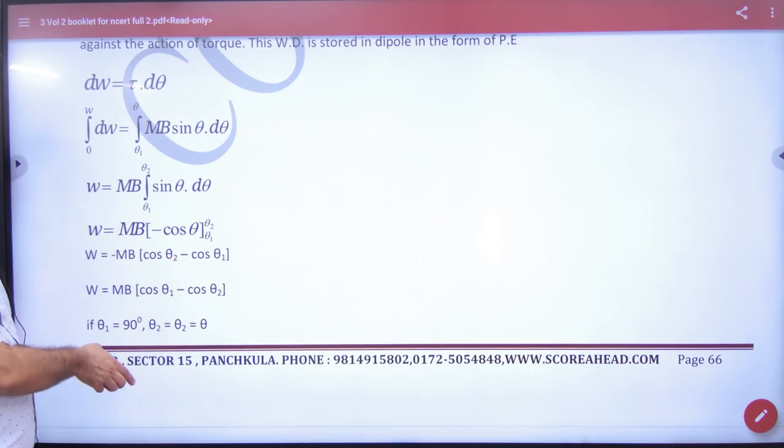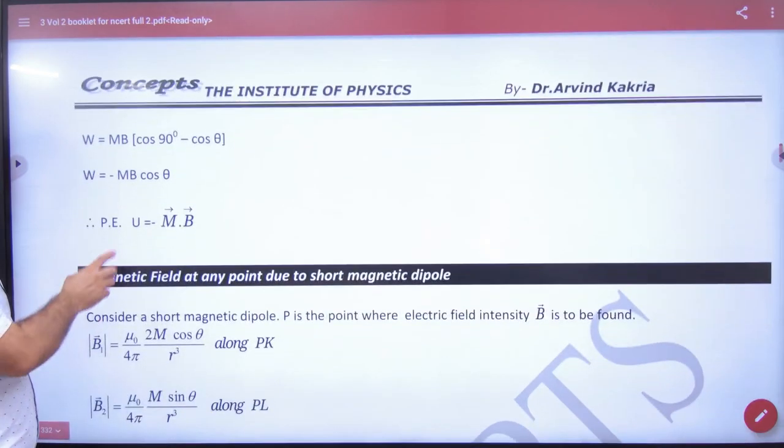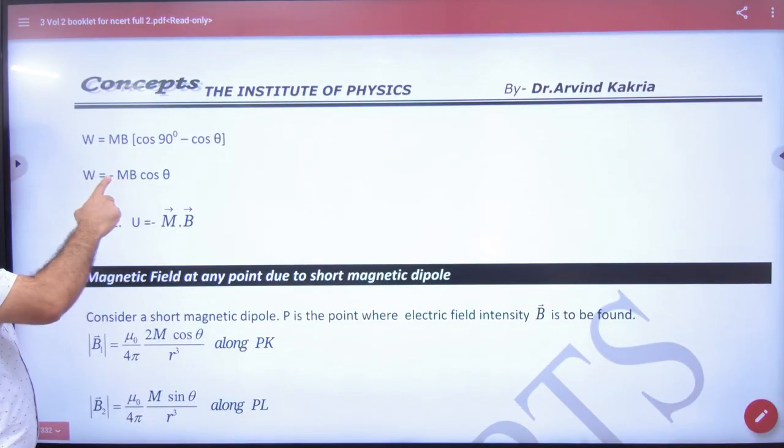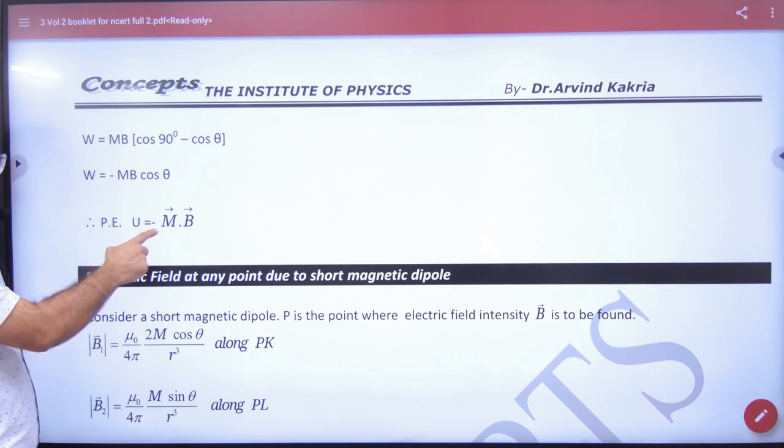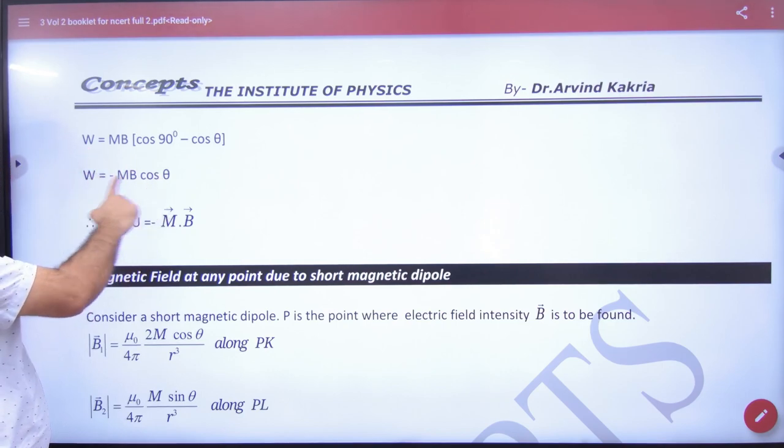So when you put it, you will have this answer that is minus M vector dot B vector, this can also be written as minus MB cos theta.